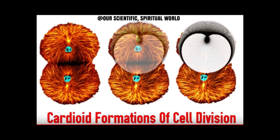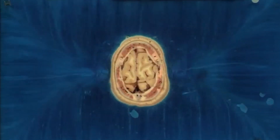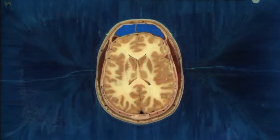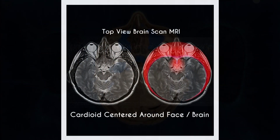Speaking of fractals, we can also see the cardioid in transitions scaling all the way down to cell division as shown here. Now let's see just how many places the cardioid reveals itself in the human body.